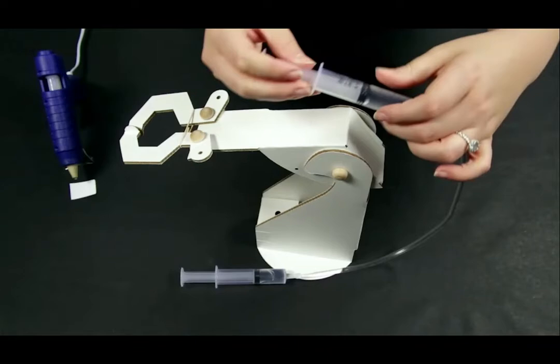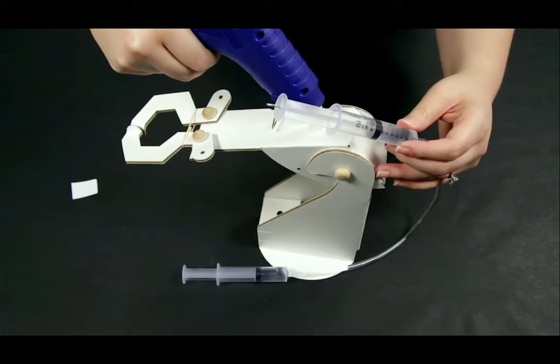Step 27: Take one of the syringes with an eye screw. Make sure its plunger is at the halfway mark. Hot glue it to the top of the arm with the plunger extending towards the hand.